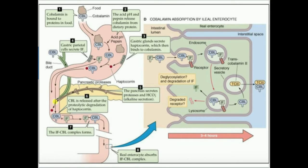When you eat cobalamin, B12, it's going to be bound to food. When you get to the stomach and you've eaten a meal, particularly high protein, you get a lot of acid — pH goes down to about 1 to 1.5. That acid is going to release the cobalamin from the dietary protein along with pepsin hydrolysis of the protein. So you'll have free B12 in the stomach for a while. However, the gastric glands secrete haptocorin, a protein which quickly picks up the B12. The reason you need haptocorin is because B12 can react with acid and you don't want it to get destroyed.